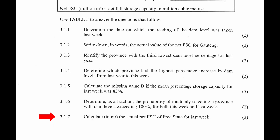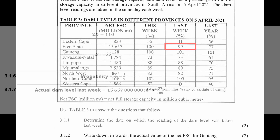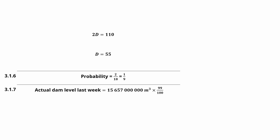Question 3.1.7: Calculate in cubic meters the net FSC of Free State for last week. From the table, Free State's net full storage capacity is 15 billion 657 million cubic meters, and the dam level for last week is 99%. So the actual dam level for last week equals 15,657,000,000 × (99/100), which gives a value of 15,500,430,000 cubic meters.